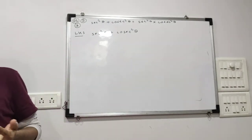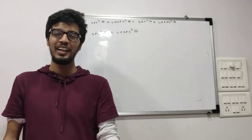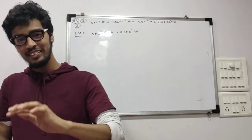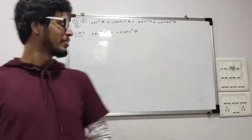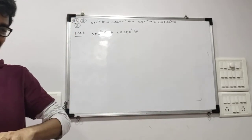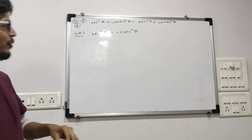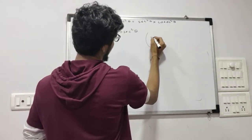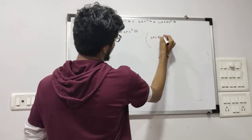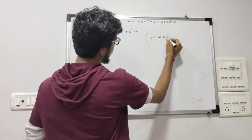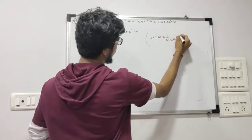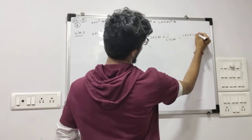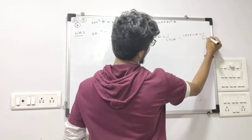So how do we do it? We already know the relation between sec and cos, and we know the relation between cosec and sin. So what do we know? Sec theta is equal to 1 upon cos theta, and cosec theta is equal to 1 upon sin theta.